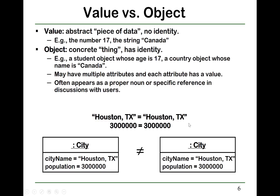We need to distinguish two concepts: value and object. A value is abstract and has no identity. Having no identity means that, for example, the value 17 — everyone's 17 is the same 17. You have a number 17, I have a number 17; in terms of value, they are exactly the same.